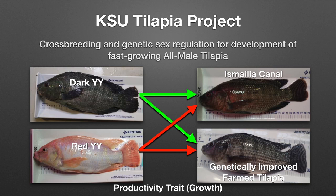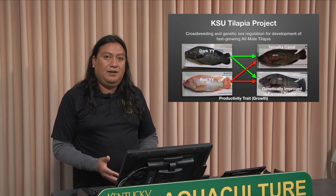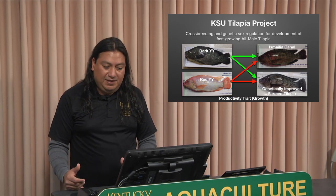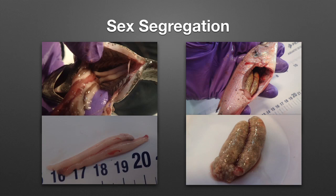At Kentucky State University, our tilapia project focuses on cross-breeding and genetic sex regulation for development of fast-growing all-male tilapia. We use YY technology males with two Y chromosomes and cross them with different strains of females. In this example you see a dark-pigmented YY male and a red YY male crossed with strains such as Ismaili Canal fish and the Genetically Improved Farm Tilapia, or GIFT. One of the main objectives is to examine sex segregation data — identifying male and female morphology and getting data on the percentage of males in each offspring.